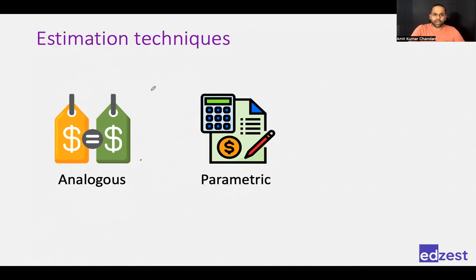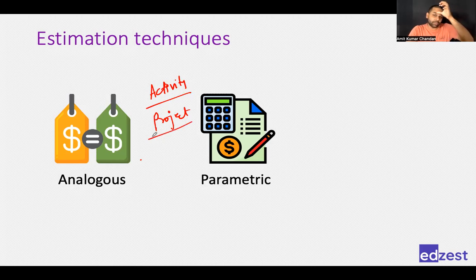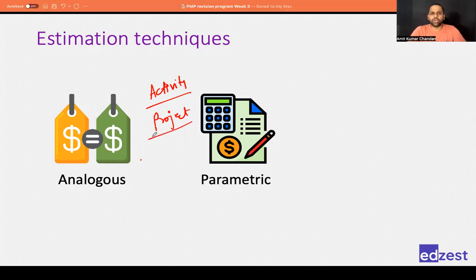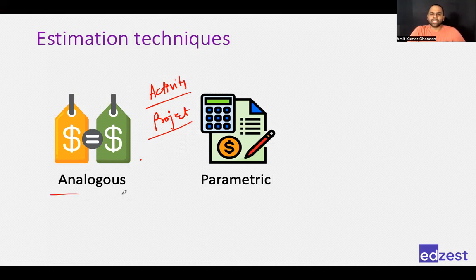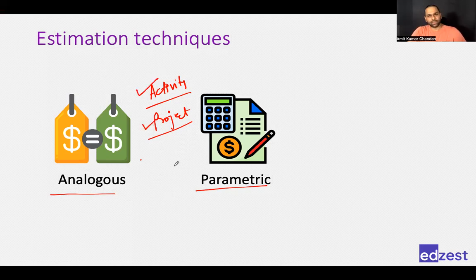Parametric estimating means using parameters available from a previous project and then estimating. This can be done at the activity level or for the entire project as well. For example, if you have just initiated the project and management wants to know the estimate, you can look at the entire previous project if it is similar or comparable.